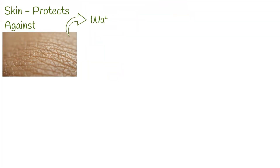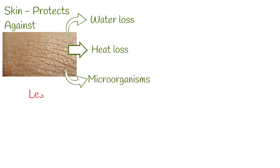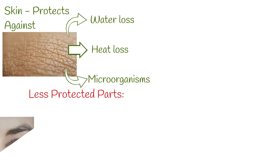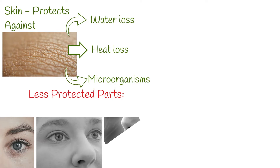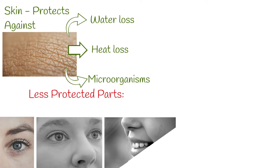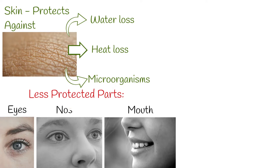The skin serves as a protective barrier against water loss, heat loss, microorganisms, and other environmental hazards. But less protected areas are the eyes, nose, and mouth. That's why touching your eyes, nose, and mouth with unwashed hands can cause spreading infection from other people or surfaces when you touch them.